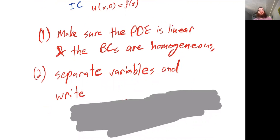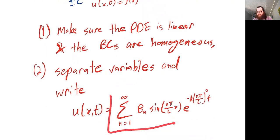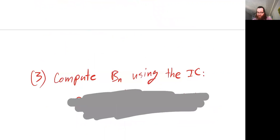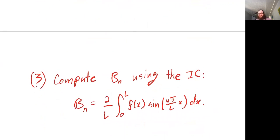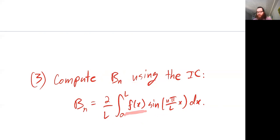Next, we separate variables. We go through the process of writing U equal to phi times G, figuring out these building blocks. For the heat equation, the building blocks are going to look like this. Then we compute what these coefficients are using the initial condition, using the formula: the coefficients are equal to two over L — or one over half the interval length — times this integral, which we can think of as the inner product between the function we care about and each of our basis functions.